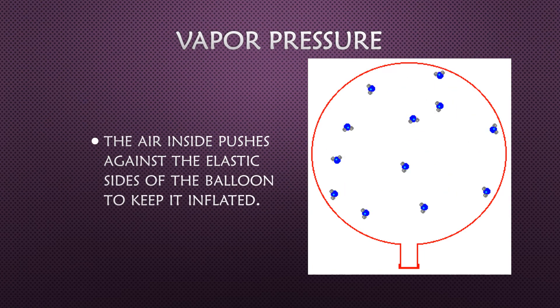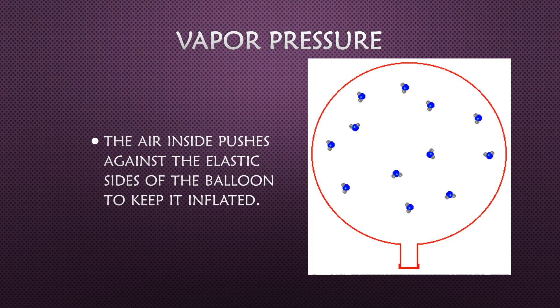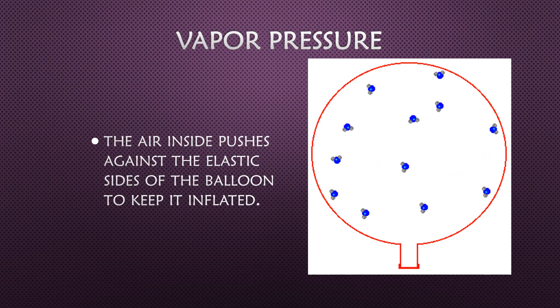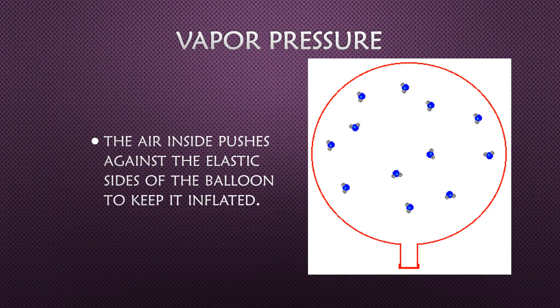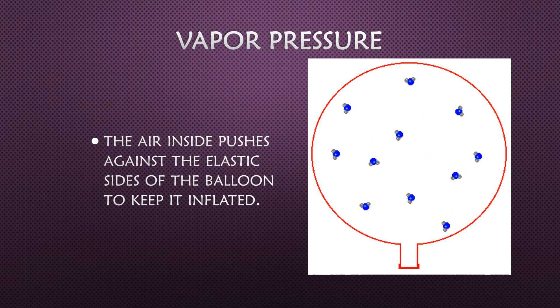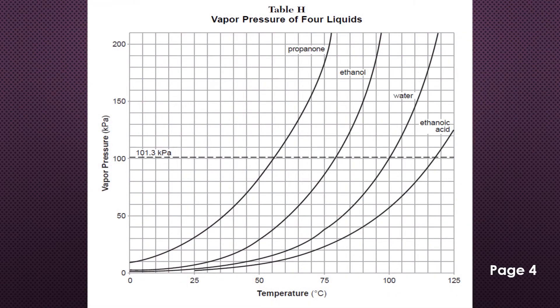The same thing happens in a balloon — the air collides with the walls of the balloon back and forth, generating vapor pressure. In your reference table packet on page four, you'll find Table H, which gives the vapor pressure of four liquids: propanol, ethanol, water, and ethanoic acid.